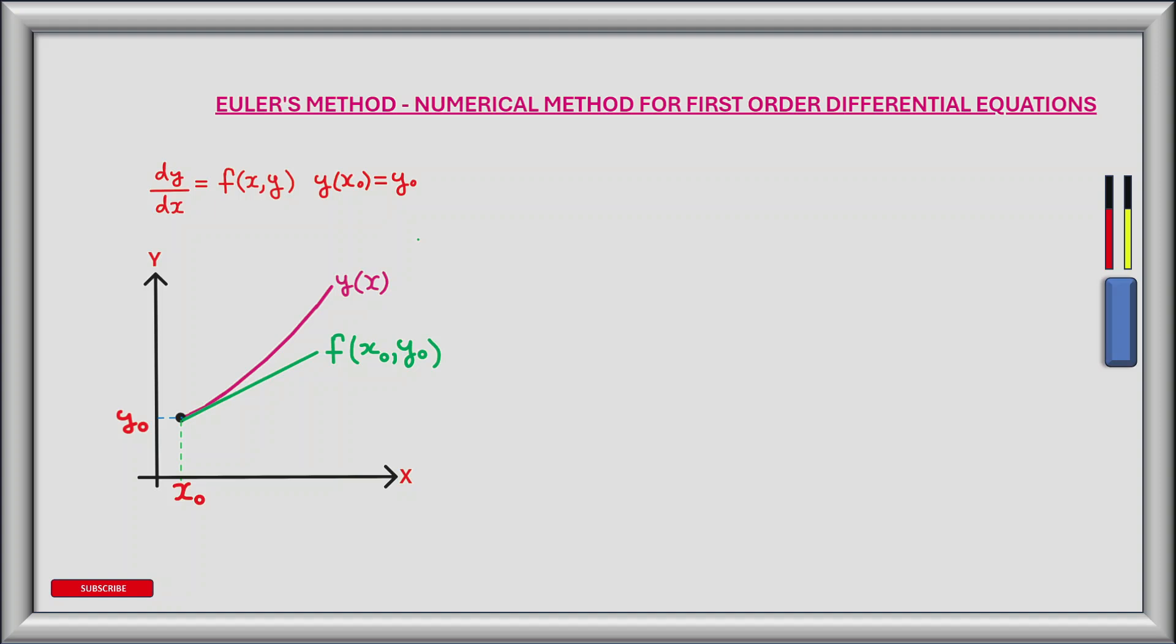We are able to calculate the slope of the tangent by using our initial values of x and y and substituting them into the derivative of the function y(x). In this case the differential equation, shown here as f(x₀, y₀).